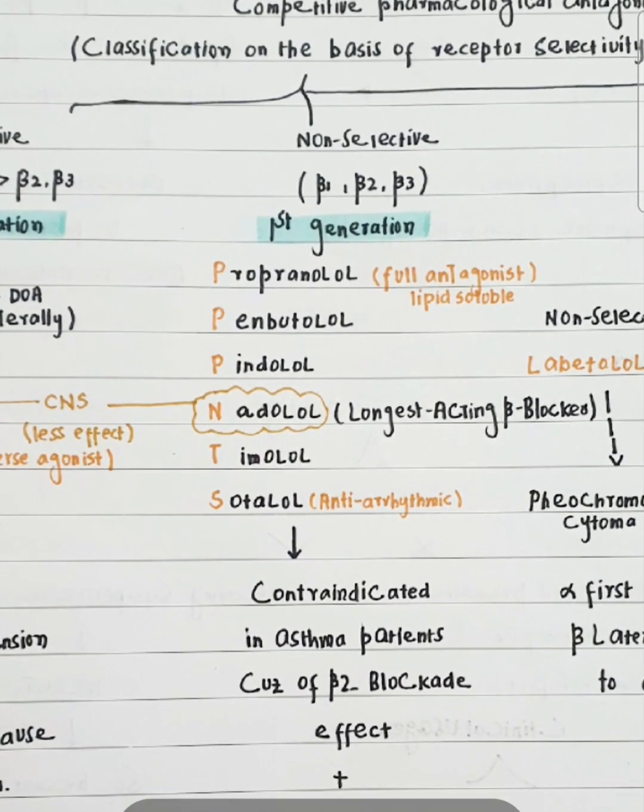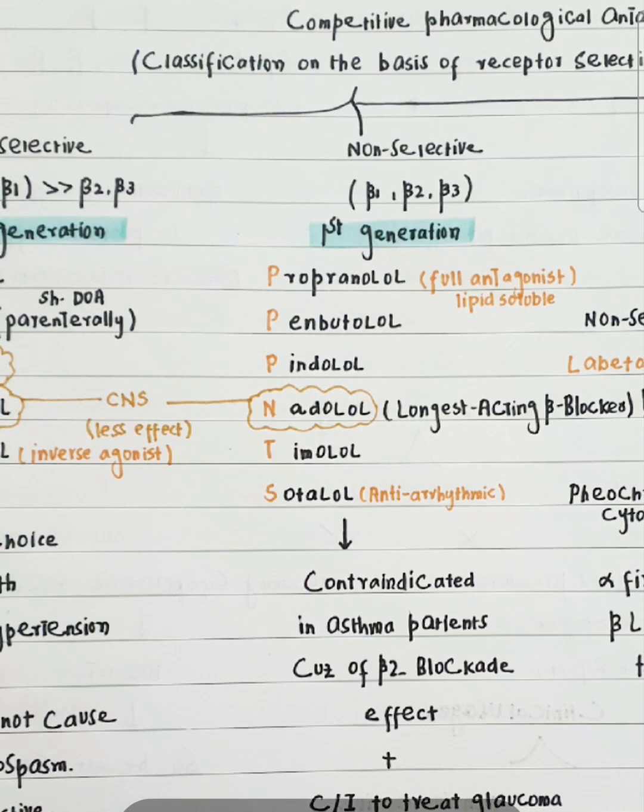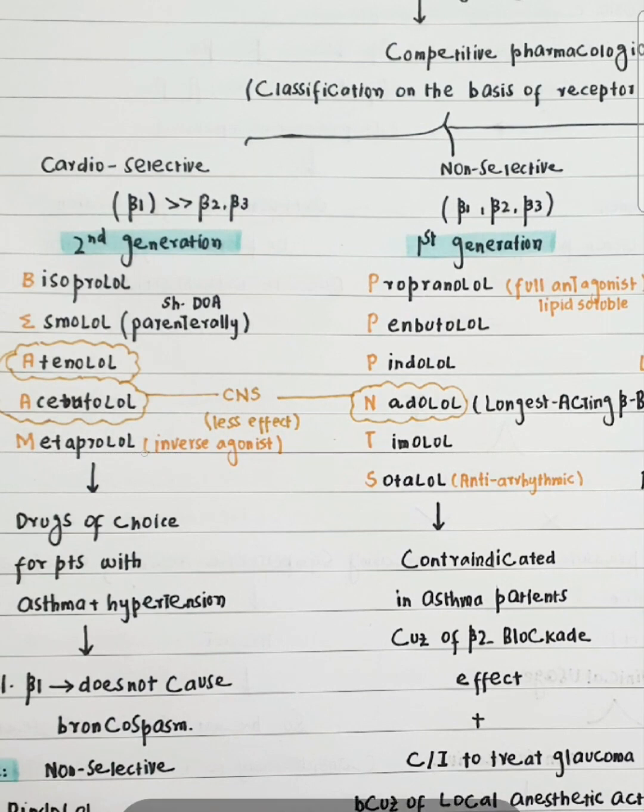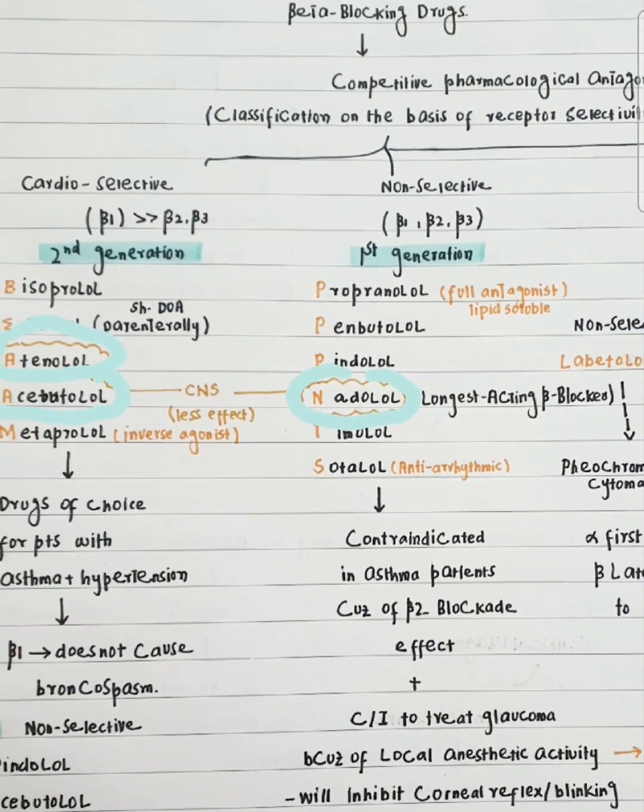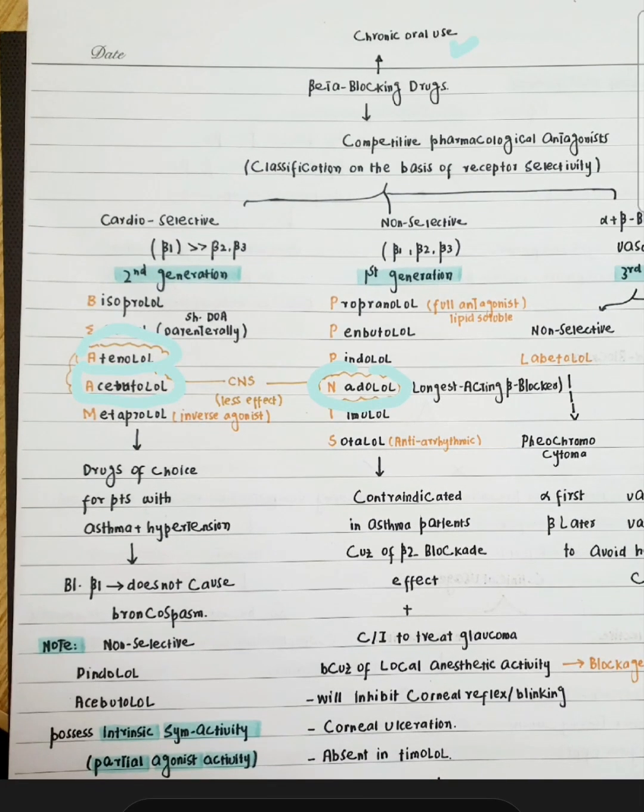Propranolol is a non-selective drug, a first generation drug acting on all beta receptors. It is a full antagonist. Nadolol is one of the longest acting beta blockers. Timolol is the drug of choice for treatment of glaucoma. Sotalol is an antiarrhythmic drug. Atenolol, Acebutolol, and Nadolol are less lipid soluble drugs, therefore they have less effect on your CNS. Propranolol is a lipid soluble drug and can cross the blood-brain barrier, so it is given for migraine patients.